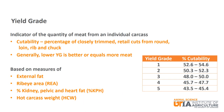Yield grade is an indicator of the quantity of meat from an individual carcass. Another term for this is cutability, which is the percentage of closely trimmed retail cuts from the round, loin, rib, and chuck. Generally, the lower the yield grade, the more meat that can be expected from the carcass. The relative percent cutability associated with each yield grade are listed in the table.